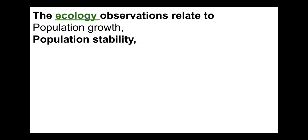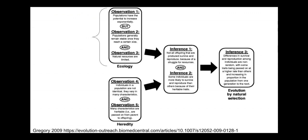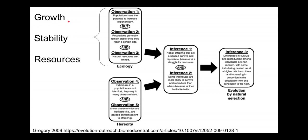The ecological observations that Darwin utilized relate to: population growth — how large populations will get over time and how they change over time; population stability — the fact that populations tend to remain stable over time; and the availability of resources — how space, water, food, sunlight, and other resources impact population growth and stability. On Gregory's figure, population growth is the top component, stability is the middle, and resources is the third. In this video we'll focus on exponential population growth.